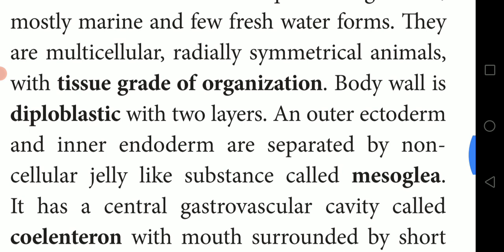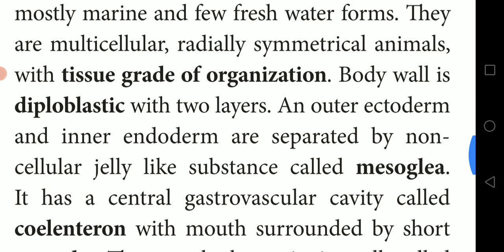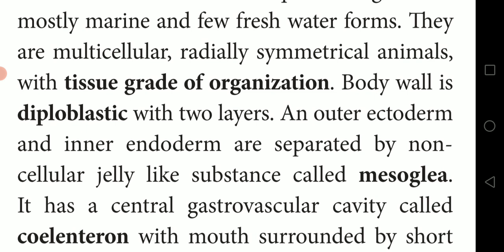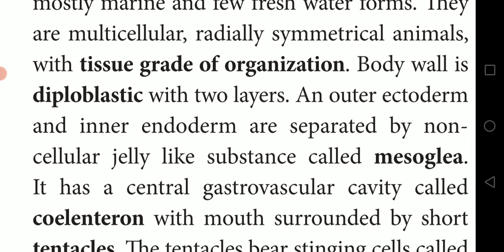Coelenterates are radially symmetrical animals — body parts arranged around the central axis, meaning the body can be divided into similar halves by cutting through the central axis in any direction. They exhibit a tissue grade of organization. The body wall is diploblastic, meaning it has two layers: the outer ectoderm and the inner endoderm, separated by a non-cellular jelly-like substance called mesoglea, which we covered in the types of coelom.